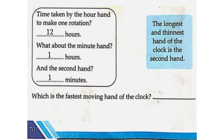The longest and thinnest hand of the clock is the second hand. Which is the fastest moving hand of the clock? The second hand.